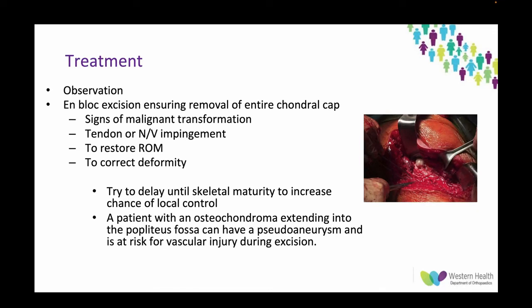Treatment of an isolated osteochondroma is usually observation. If you have any signs of malignant transformation, tendon or neurovascular impingement, or you want to restore ROM or correct deformity, you can do an en-bloc excision — the key being you want to remove the entire chondral cap. The general advice is to delay until skeletal maturity to increase the chance of local control. Be aware that a patient with an osteochondroma extending into the popliteal fossa can have a pseudoaneurysm and is at risk of vascular injury during excision, so preoperative MRI can help define the local anatomy.